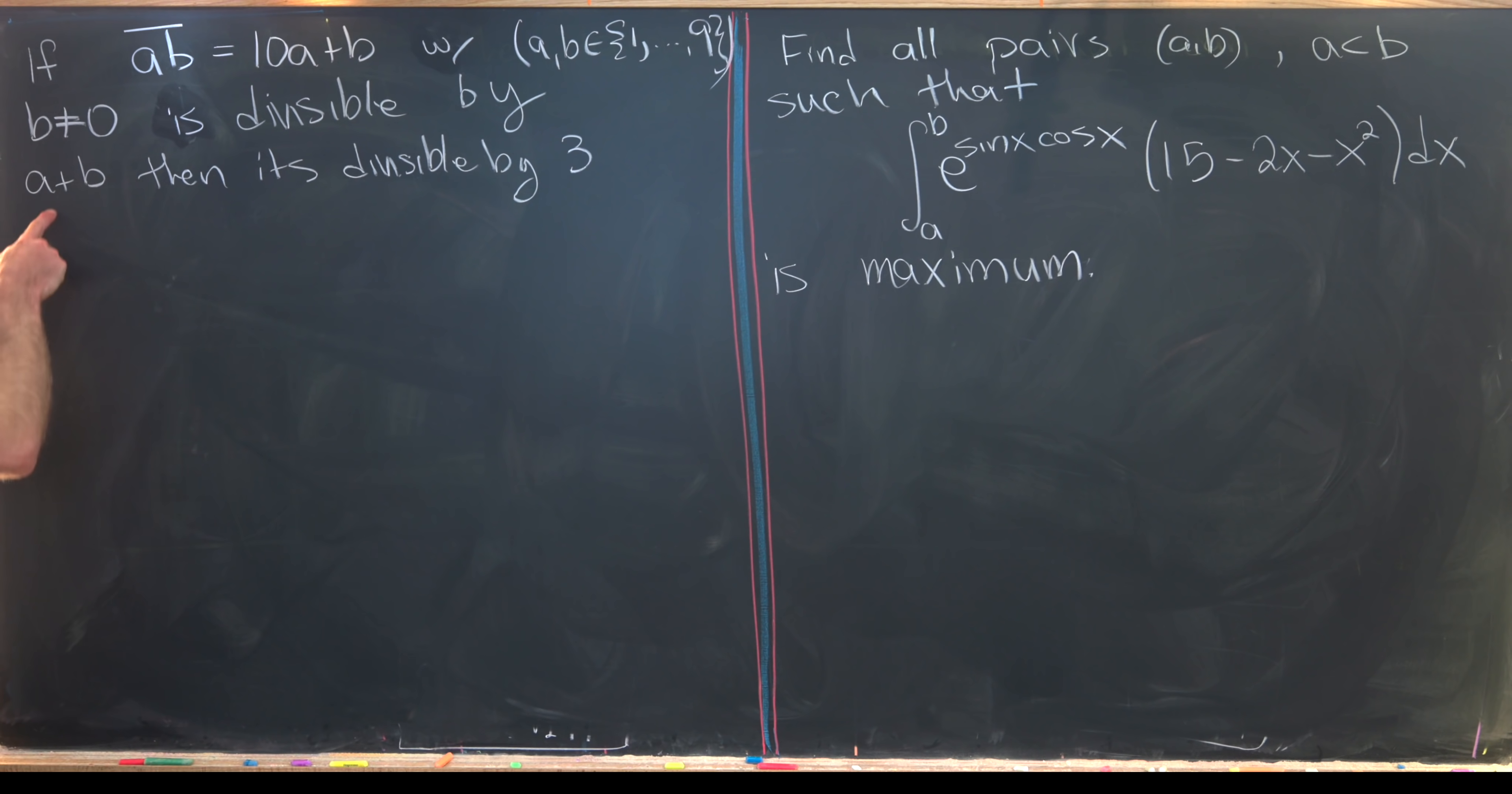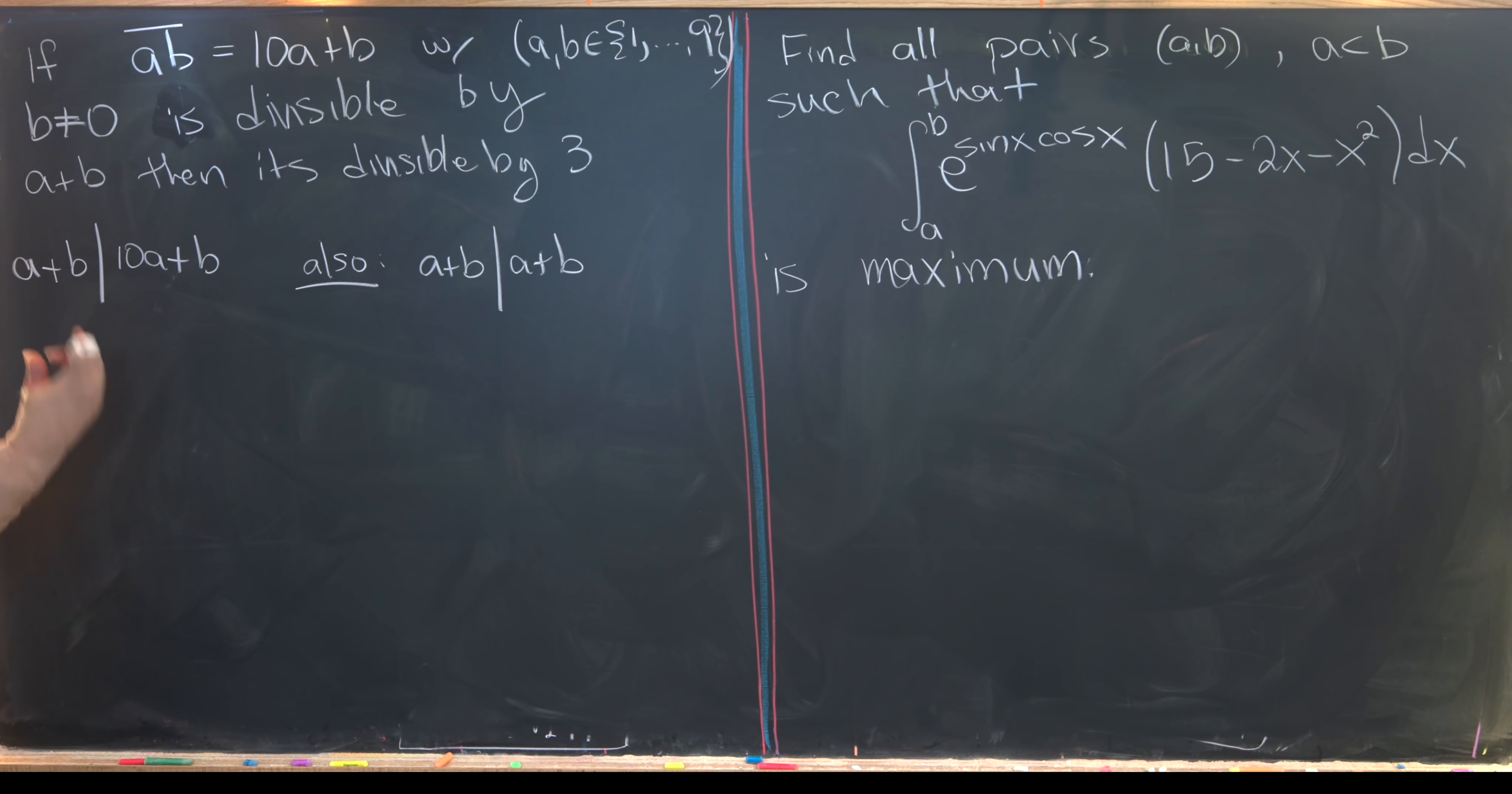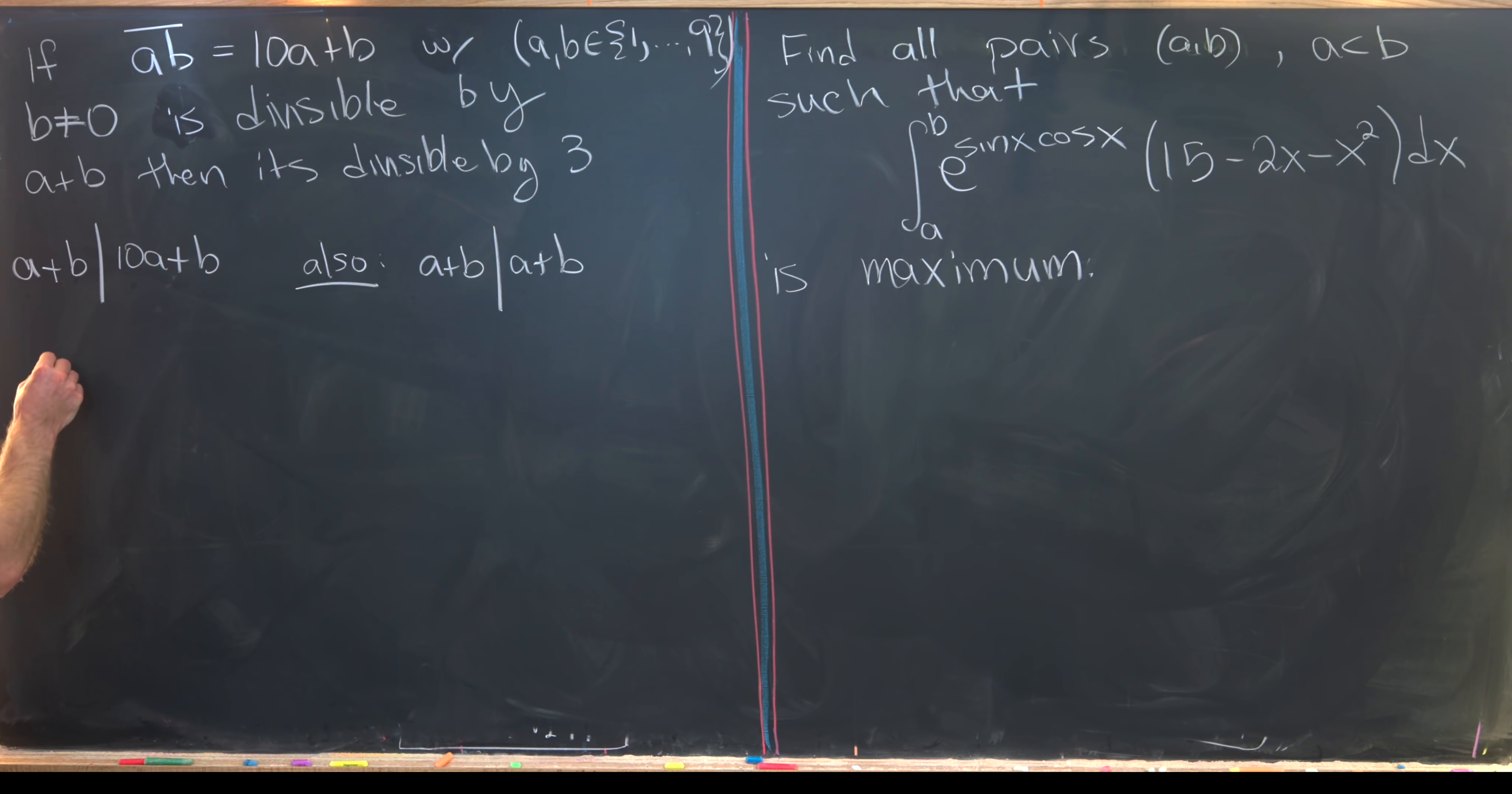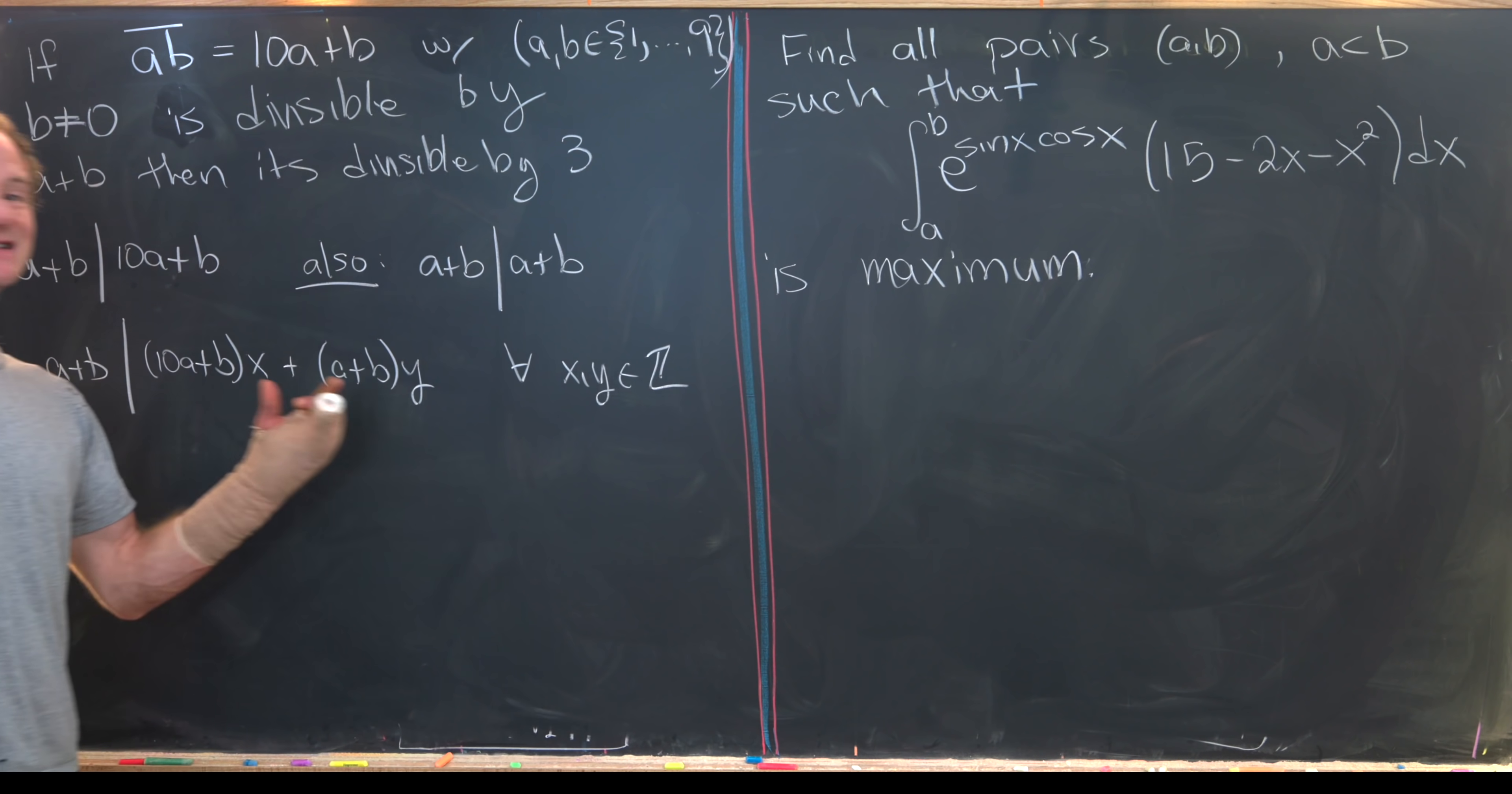Well, like I said, we are supposing that this number right here, 10a plus b is divisible by a plus b. So that means we can write a plus b divides 10a plus b. And then also very, very trivially, we know that a plus b divides itself. Okay, but if we've got a plus b dividing 10a plus b, and a plus b dividing a plus b, then a plus b divides any combination of 10a plus b and a plus b. So most generally, that means that a plus b divides 10a plus b times x plus a plus b times y. And this is going to be true for all integers x and y. So that's a standard divisibility rule.